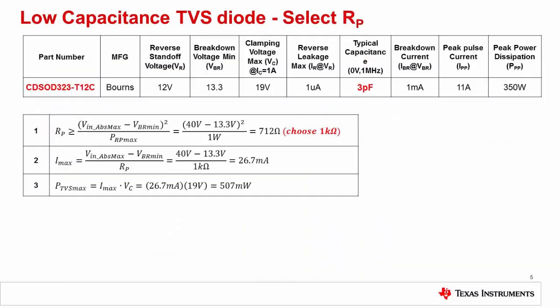Here are the same calculations for selecting the series protection resistor RP that we did in the previous video. The results are slightly different since the breakdown and clamp voltages are different for this example. Nevertheless, we use a 1 kilo-ohm series resistor for both examples. Notice on this slide that the power dissipation during fault conditions can be very high. These can be minimized by choosing a larger value of RP. Let's take a look at how changing RP impacts performance.